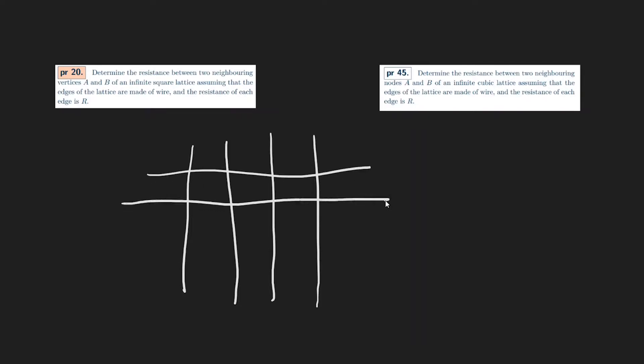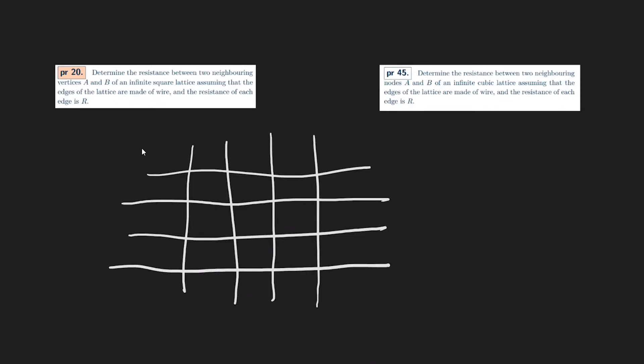Let's draw out the lattice first. So there's a lattice like this, and each of these edges are resistors — all edges with resistance R. Basically the strategy with these problems is you want to create some symmetry, because any time you have things that are infinite, you need symmetry to solve them because it's too complicated.